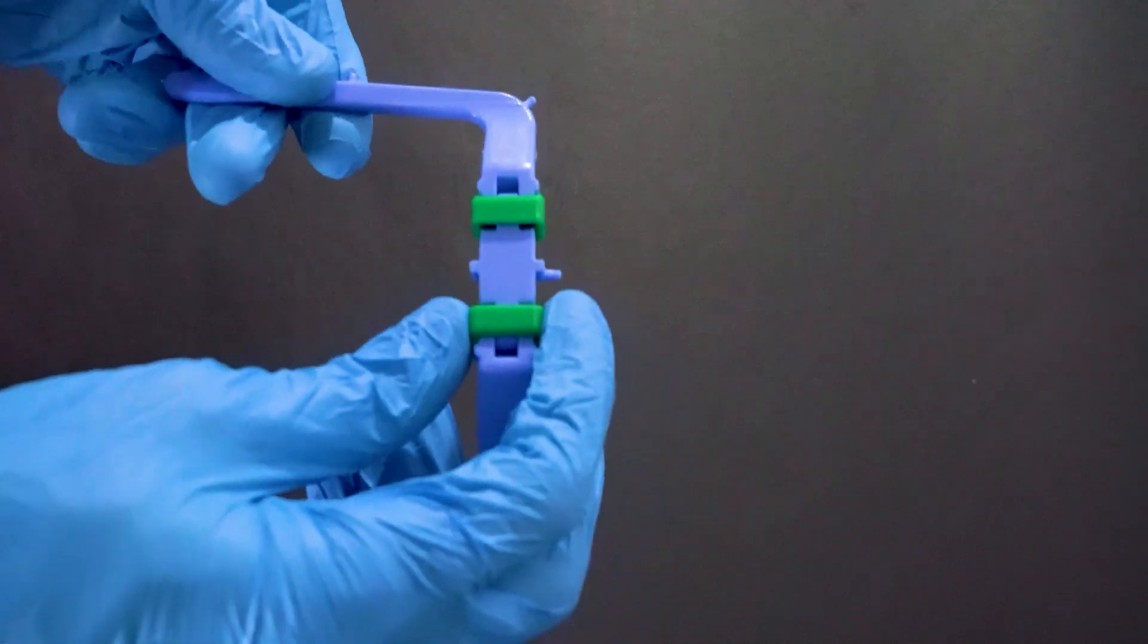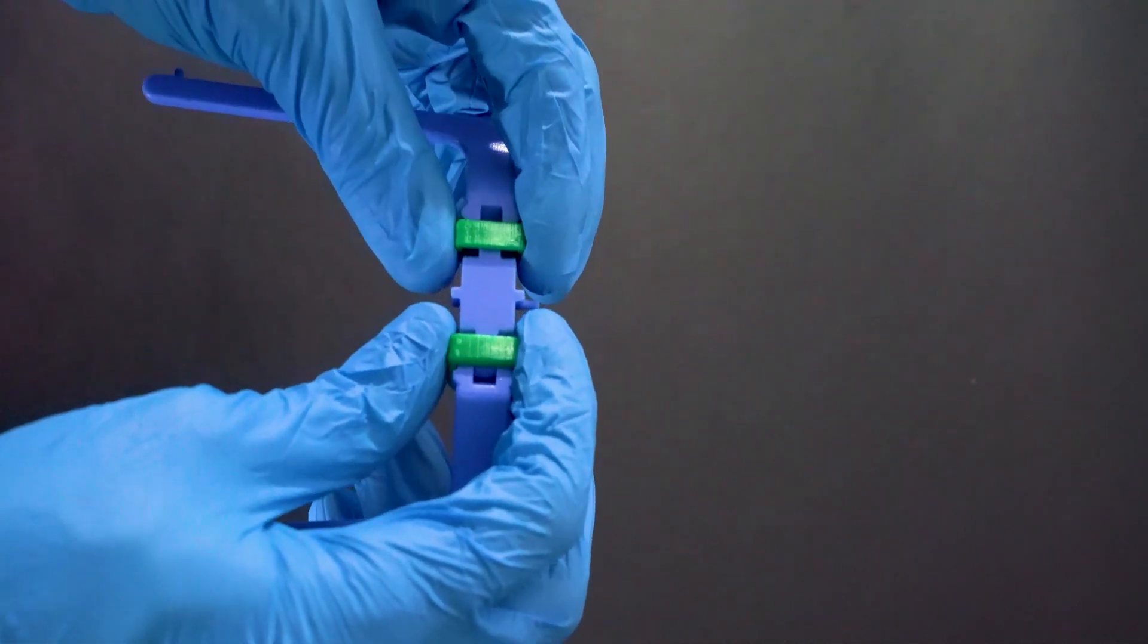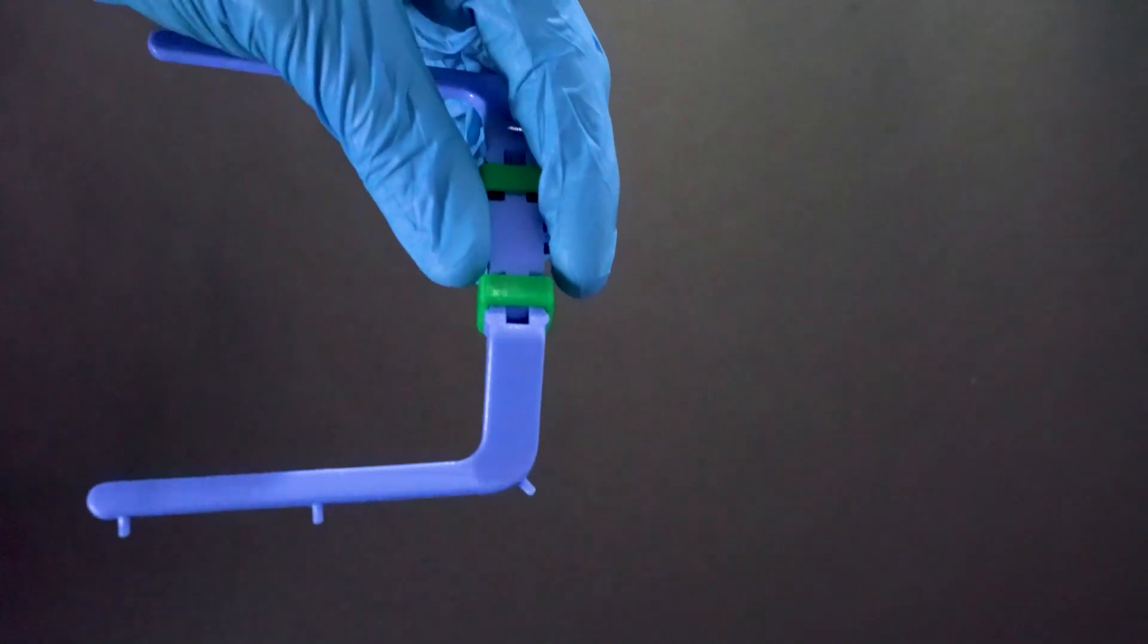To place the rubber dam on the frame, the two sliding bars are placed in the locking position and the rubber dam can be placed on the frame.